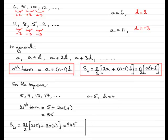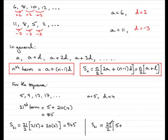Or we could use the other formula for the sum of 21 terms, since we know the last term — the 21st term — which is 85. So we've got n over 2, with n equal to 21 divided by 2, multiplied by the first term, which is 5, plus the 21st term — the last term — which is 85. So 5 plus 85 is 90, and 90 times 21 divided by 2 comes out at 945. Both answers agree, and that shows you how we can find the sum of the first n terms.